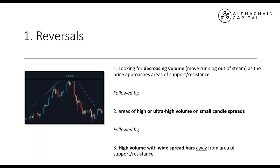The first example is reversals. When a price is approaching a key support or resistance level, we're looking for signs that it may reverse. Three key things using VSA: number one, we're looking for decreasing volume, which could be seen as a move running out of steam as the price approaches areas of support and resistance. As we're approaching that level, we want to see volume decreasing — it's running out of energy — which gives us an indication that it may get stopped at that support or resistance.